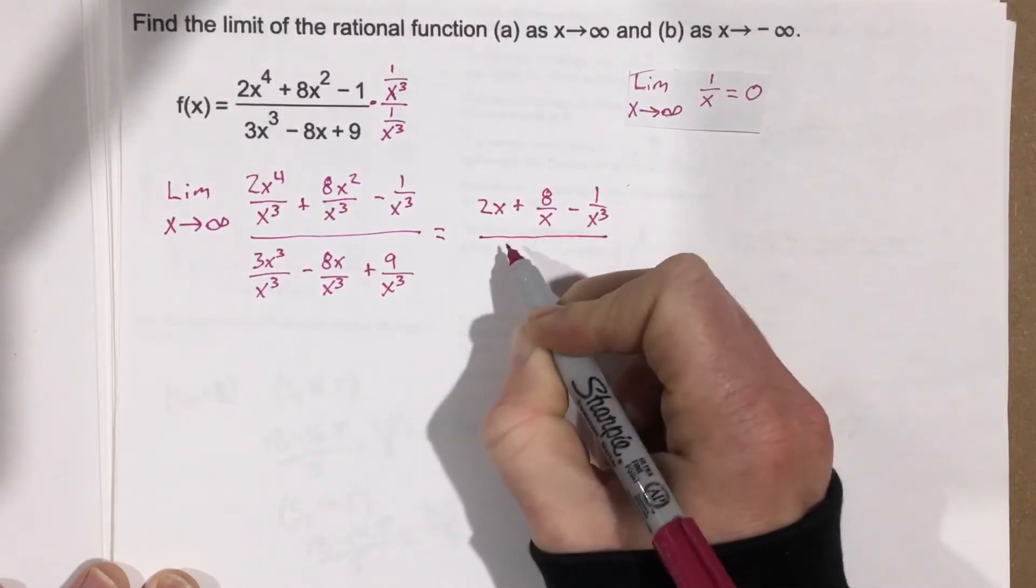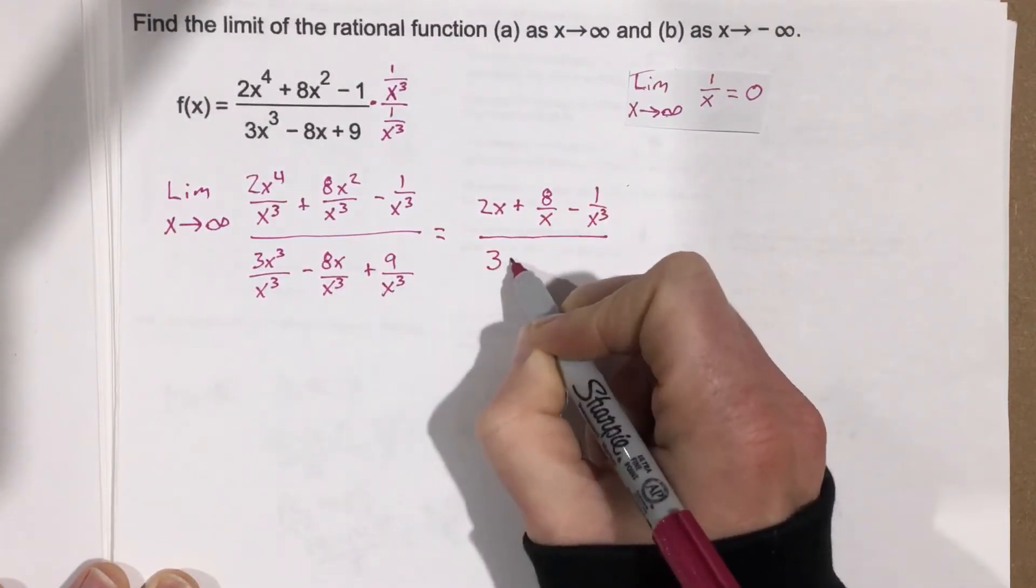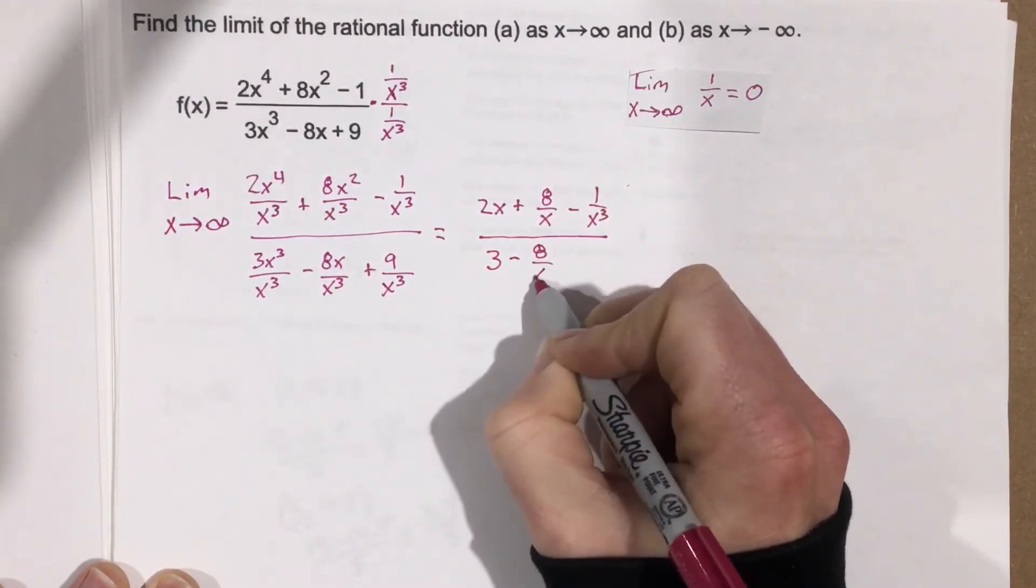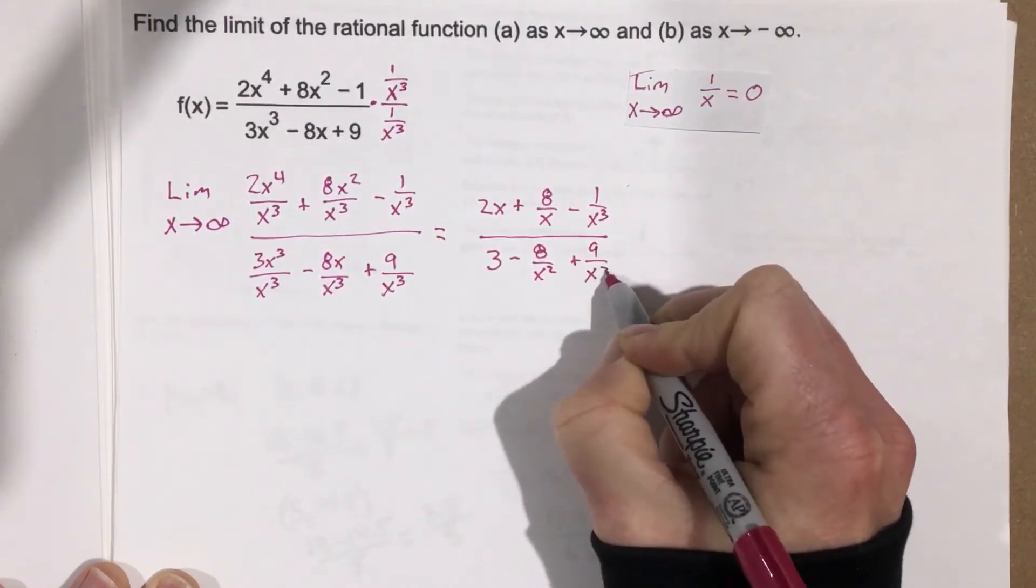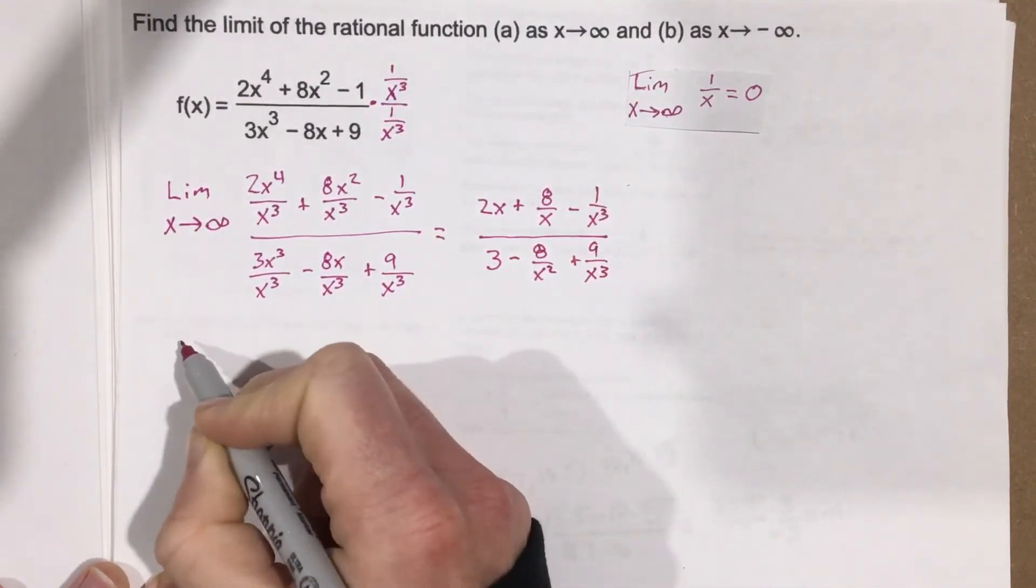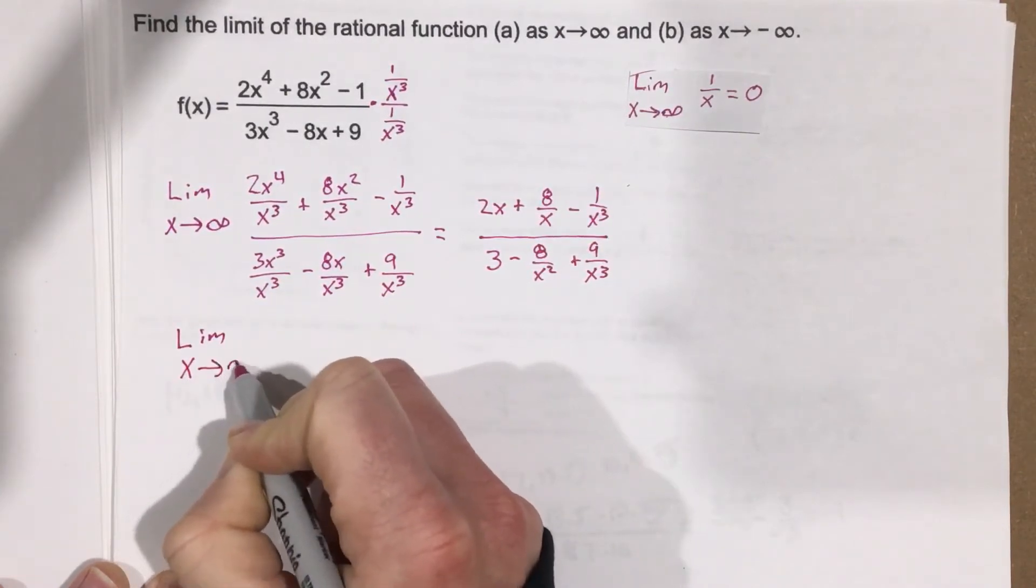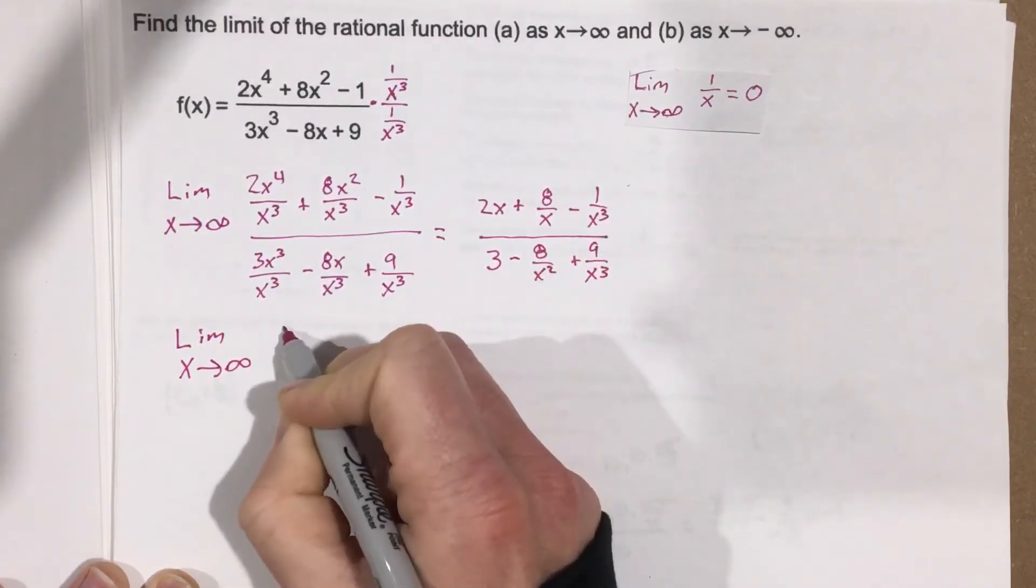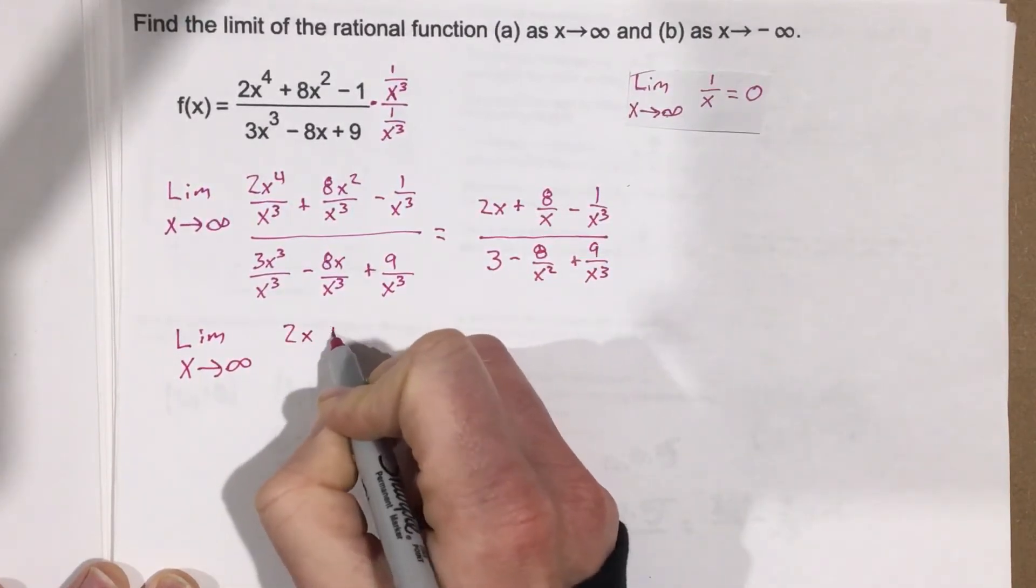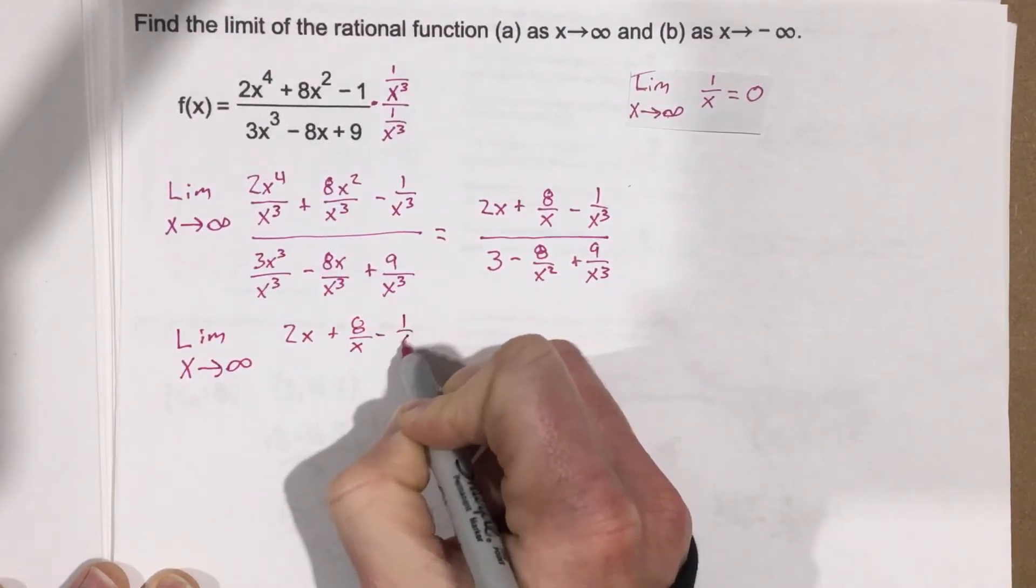all over 3 minus 8 over x squared plus 9 over x cubed. So I have the limit as x approaches infinity for this problem, which is 2x plus 8 over x minus 1 over x cubed,